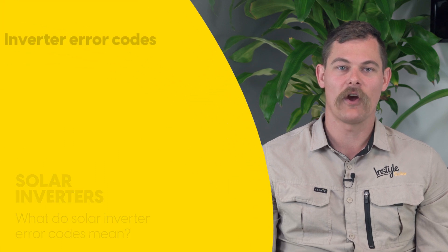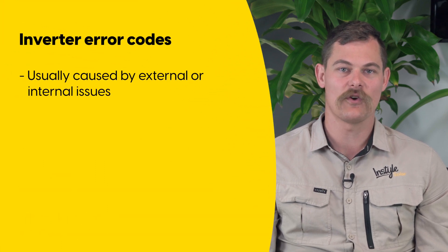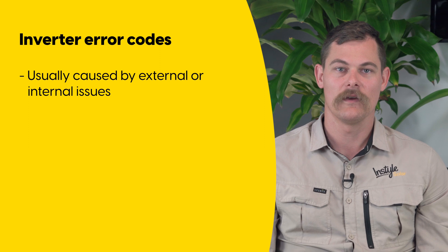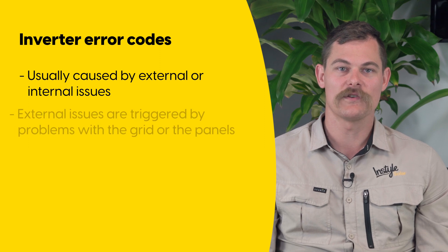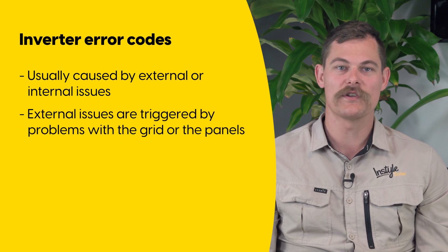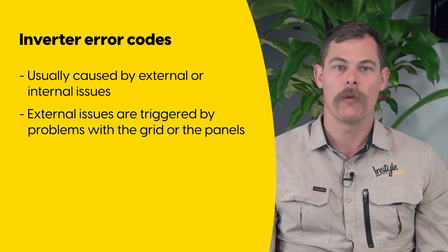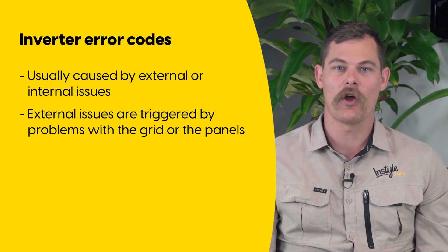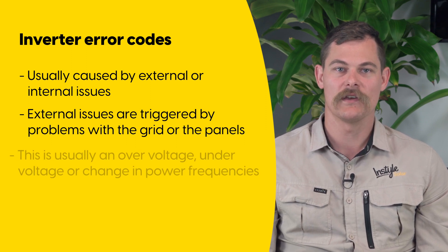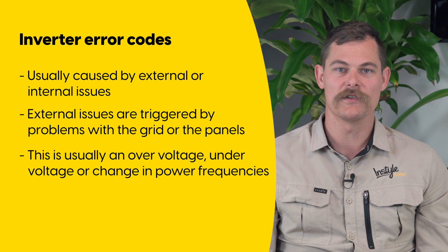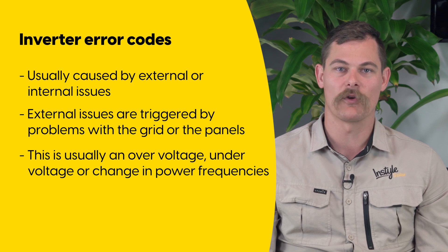Inverter error codes are usually caused by either external or internal issues. External issues are triggered by electrical issues that originate either from the grid or from the solar panels. Most of the time this is due to either an over voltage, under voltage, or a change in the frequency of the power that is coming from the grid or from the panels.